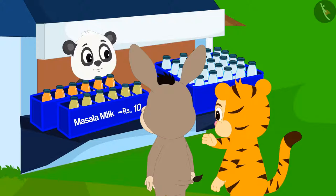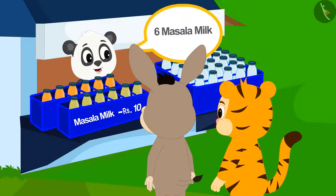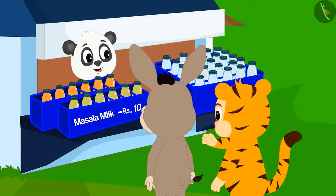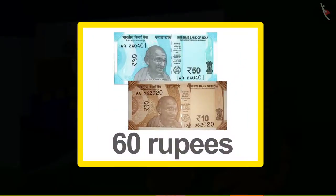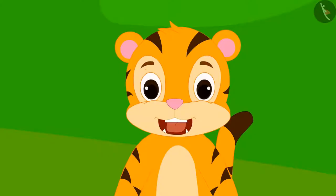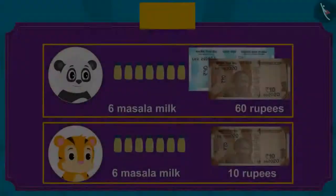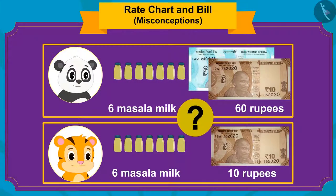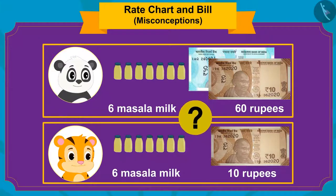But Golu told him that he had taken six bottles of spiced milk, so he would have to pay 60 rupees. Sher Khan was shocked to hear this. Children, can you tell who is correct between the two?